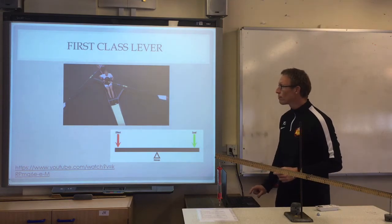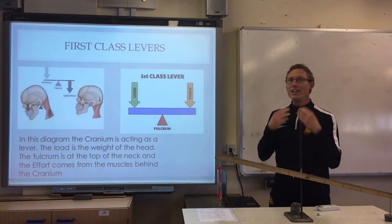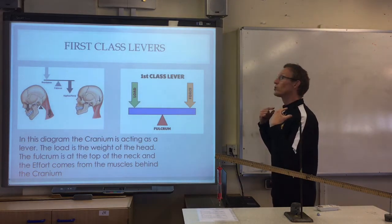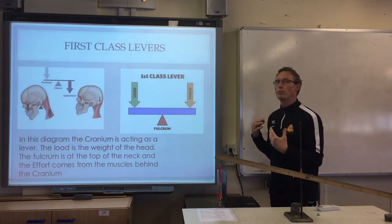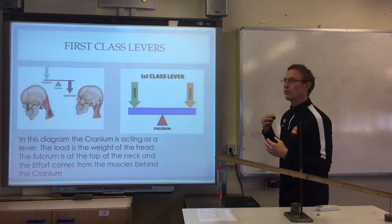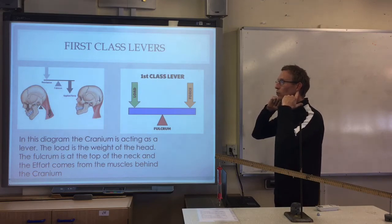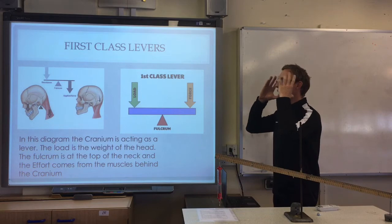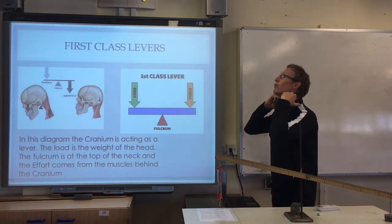In our body, our neck is a first class lever and it allows forwards and backwards motion as if you're heading a football. It's a first class lever because the neck at the top is the fulcrum, the load is the weight of the head, and if you're bringing your head backwards, the effort is the muscles that link to the back of the cranium.